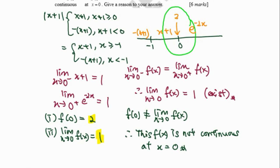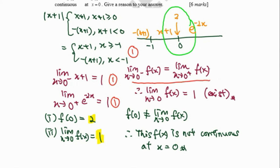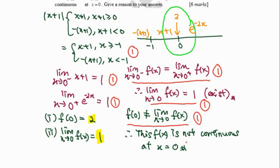Now let's review the important steps you must not miss. First, expressing the modulus function as a piecewise function earns one mark. Answering the left-hand limit earns one mark, and the right-hand limit earns another. Providing the reason that the left-hand and right-hand limits are equal means the limit exists. Then, determining continuity by showing f(0) does not equal the limit gives the conclusion that the function is not continuous at x = 0.